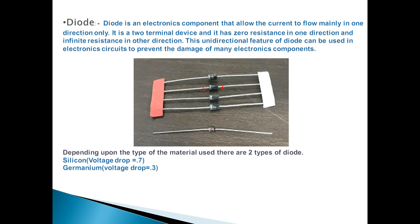Let's start with the definition of the diode. Diode is an electronic component that allows the current to flow mainly in one direction only. It is a two terminal device and it has zero resistance in one direction and infinite resistance in the other direction.